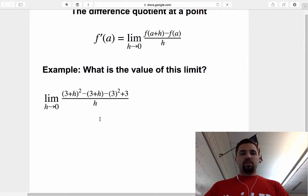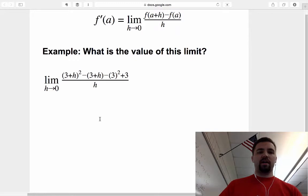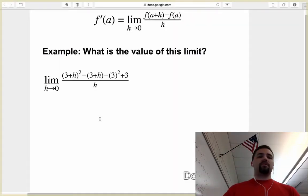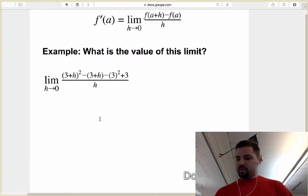And so what I want to try and do is pull out what the value of this limit is without trying to foil everything out and simplify using that method. Now this one actually wouldn't be terrible, but if that was a cubed or to the fourth power, then it would really be bad. So here's what we're going to do. I'm going to look at this and I'm going to notice a couple things.